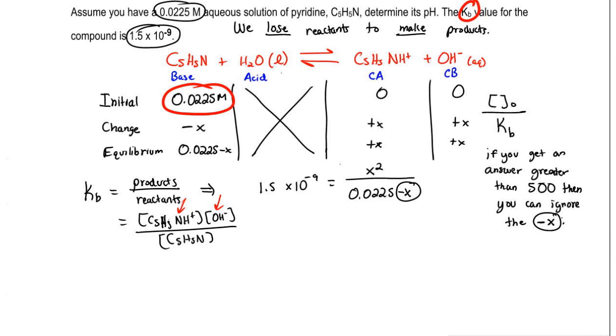So just remember that. This is the trick we're going to use to see if we can ignore that minus X. Take the initial concentration, divide it by the K value we're using. If you get an answer greater than 500, that means we can ignore that minus X. Because that minus X is going to be so small, it doesn't affect our real answer.